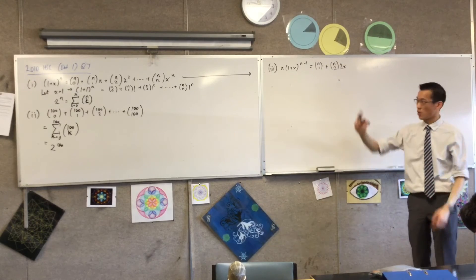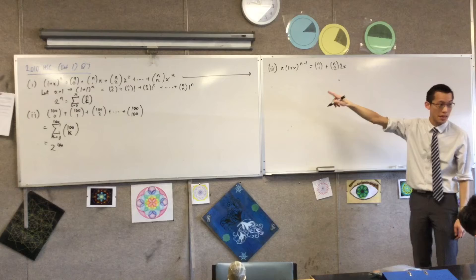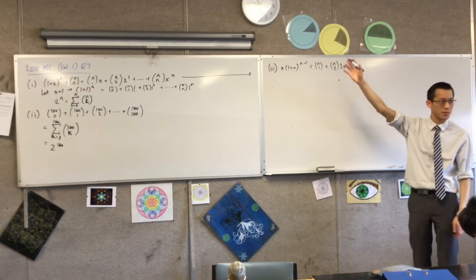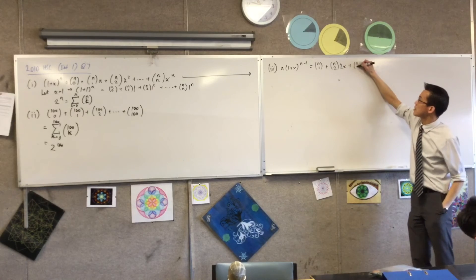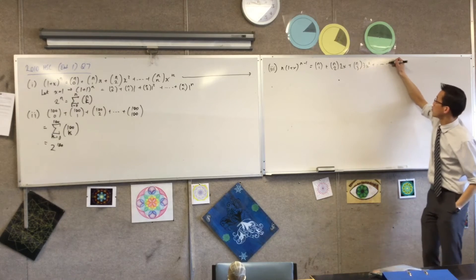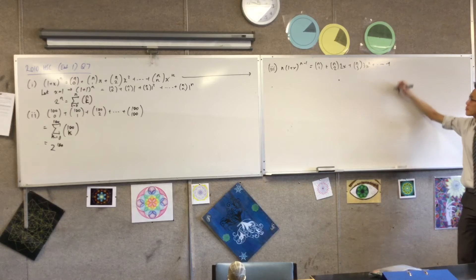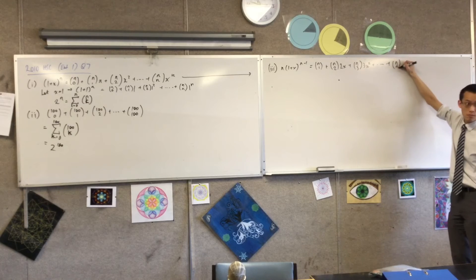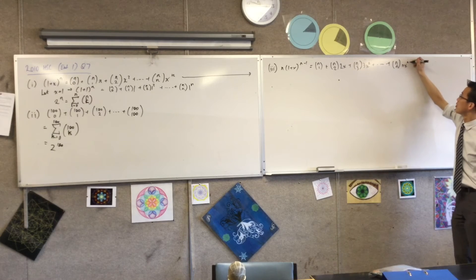So even though I don't have a, well I've got three terms over there, but my third, my zero term disappeared. So I'm going to add here nC3, 3x squared, plus dot dot dot. What's my last term? nCn times n times x to the (n-1). Okay, happy?